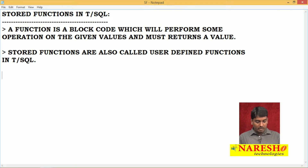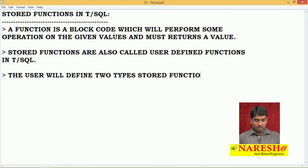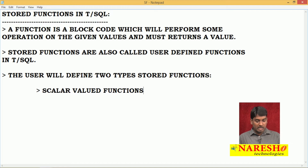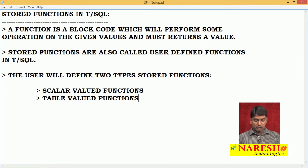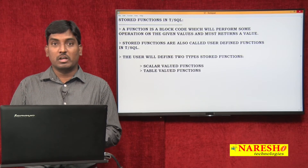Now, how many ways can the user create stored functions? The user can design stored functions in two ways. The first type is called scalar valued functions, and the second type is called table valued functions. These are the two types of functions you can create in T-SQL language.